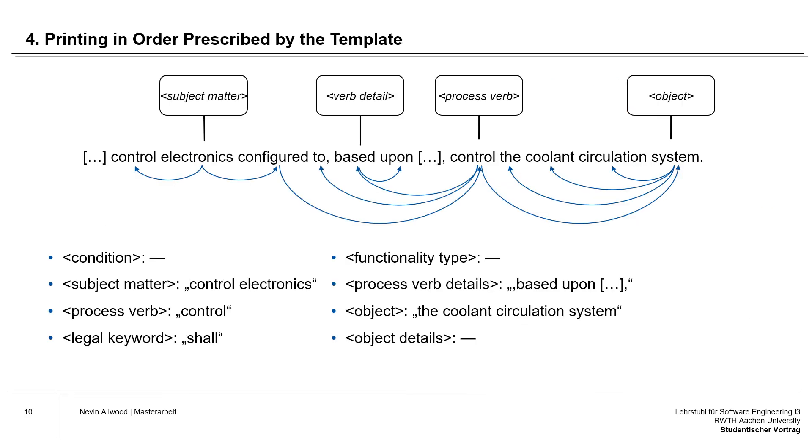In the last step, textual requirements are generated by printing the extracted information in the order prescribed by the template, once words for all non-optional template elements could be extracted. Since you need more than just a string of single words for a reasonable textual requirement, the additional words describing a template element must of course also be included.